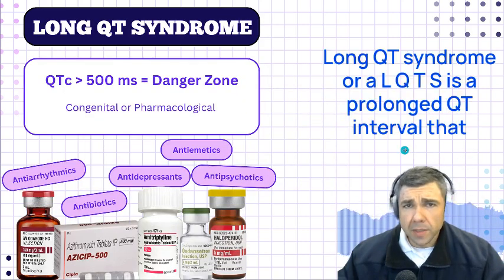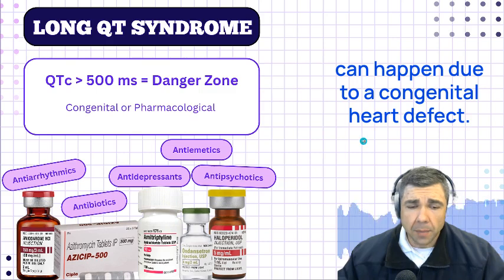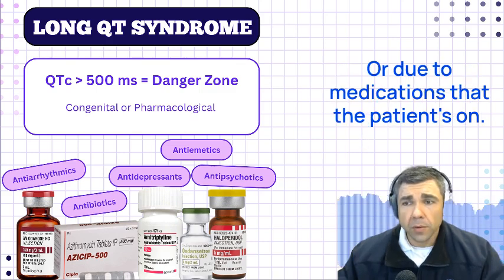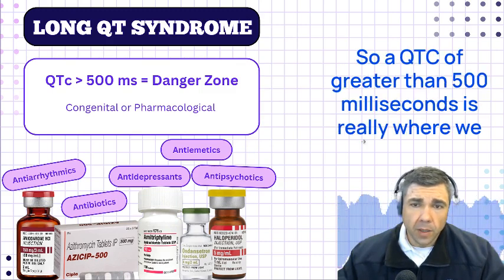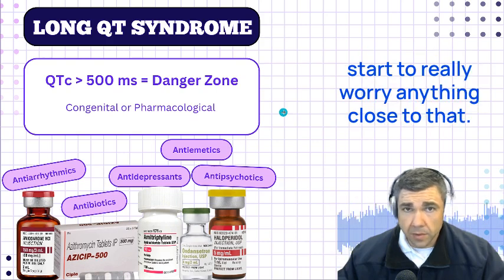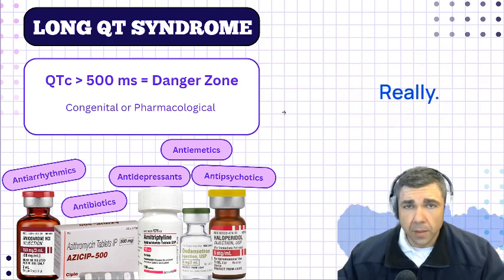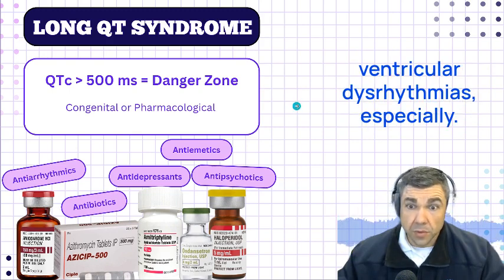Long QT syndrome, or LQTS, is a prolonged QT interval that can happen due to a congenital heart defect or due to medications the patient is on. A QTc of greater than 500 milliseconds is really where we start to worry. Anything close to that, we start to worry about dysrhythmias — ventricular dysrhythmias especially.